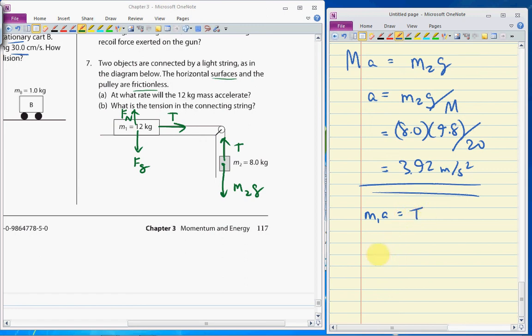So, tension is mass 1, 12 times 3.92. From this, we get 47 newtons of tension in that string. And the tension is the same everywhere as well.